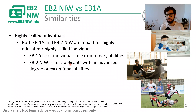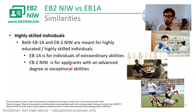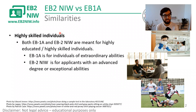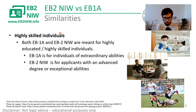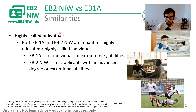Let's talk about similarities and differences between these two green card categories. Starting with similarities: both of them are green card processes, so the end result — getting a green card, permanent residency — is the same. It doesn't really matter whether it's EB1, EB2, EB3, or even family-based; at the end of the day, once you get the green card, it is a green card.